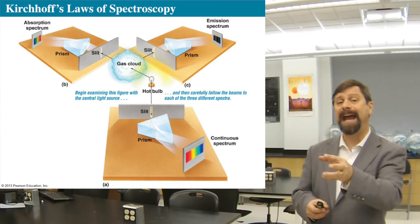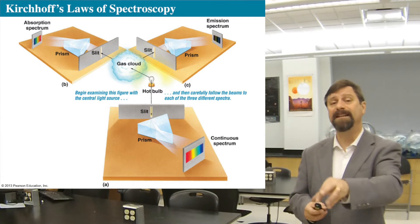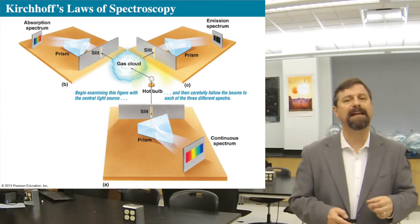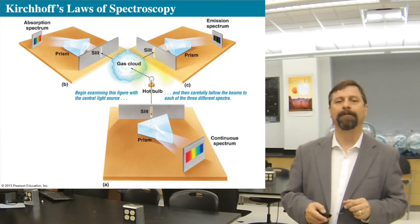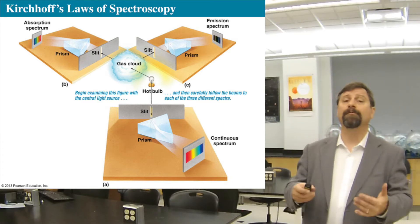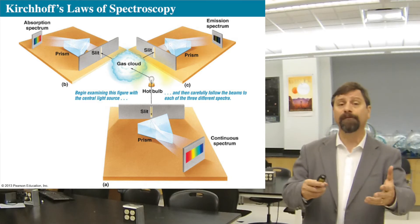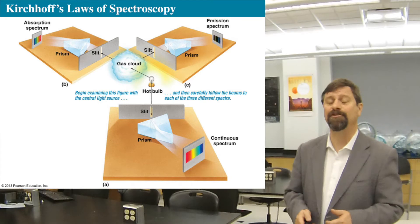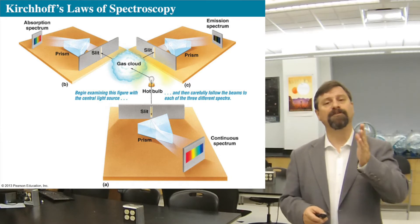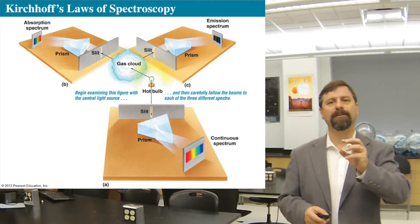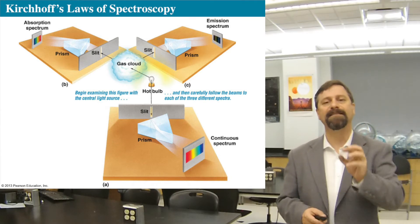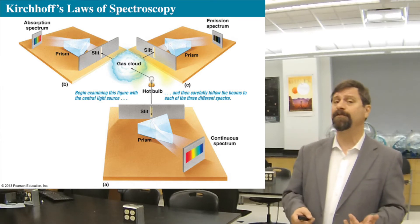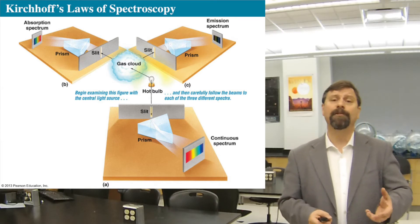Now if we look at the gas that did the absorbing, we will see an emission spectrum. So Kirchhoff's laws are really three sides of the same situation — you can look straight at the hot dense object and you'll see a continuous source.